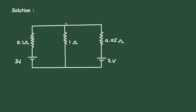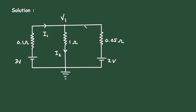Let's say this is node 1 with voltage V1, and this is a reference node. Let's say this is current with positive polarity, so the current will flow like this. Let's say this is current I1, this is current I2, and from this positive polarity to this ground, this is current I2.